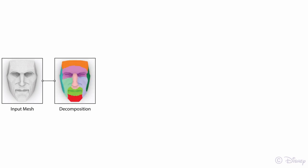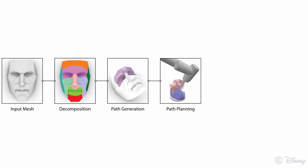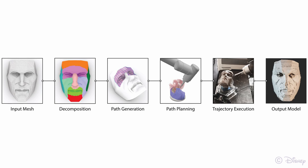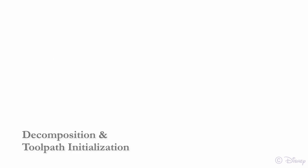Our method starts from decomposing the input into sub-areas and generates an initial set of toolpaths that define the desired sculpting styles. We then run optimization to find the optimum trajectories to resolve clearance and reachability issues and then execute these trajectories on a real robot to fabricate a piece of sculpture that approximates the input with the user-defined styles.